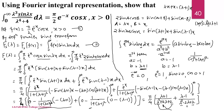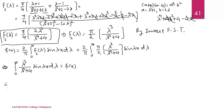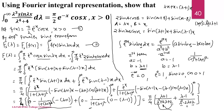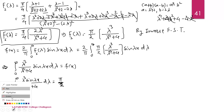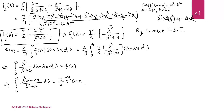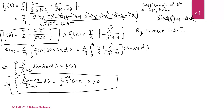Substituting f(x) from equation 1, we obtain: integral from 0 to infinity of λ³·sin(λx)/(λ⁴+4) dλ = π/2 · e^(−x) · cos(x), where x is positive. This is the required proof. Thank you for listening.